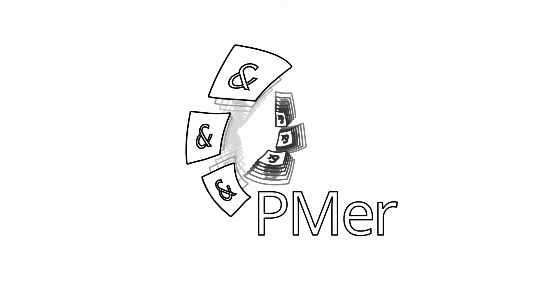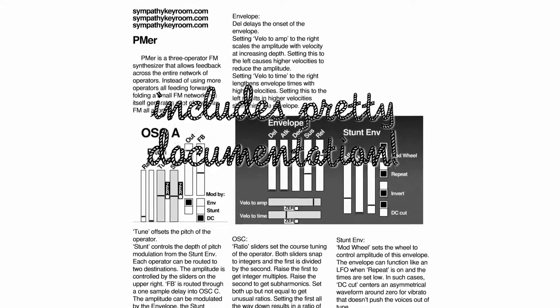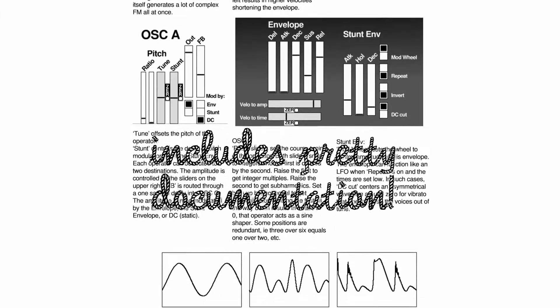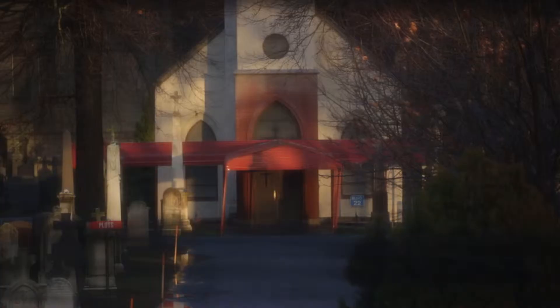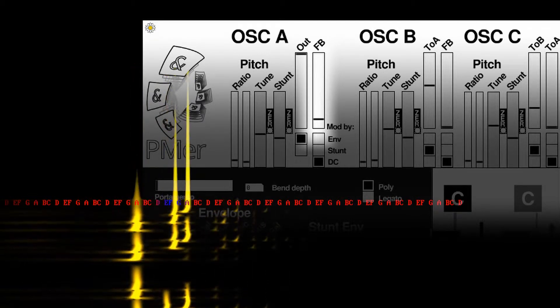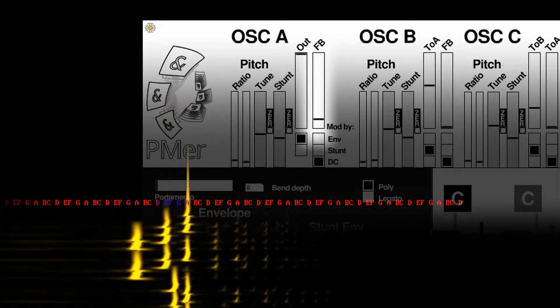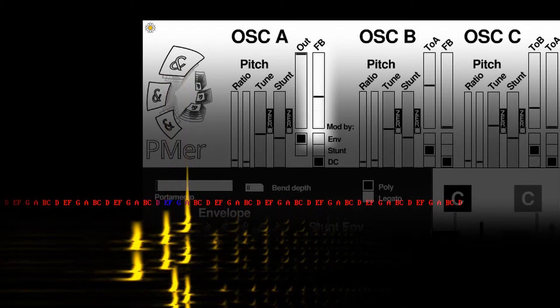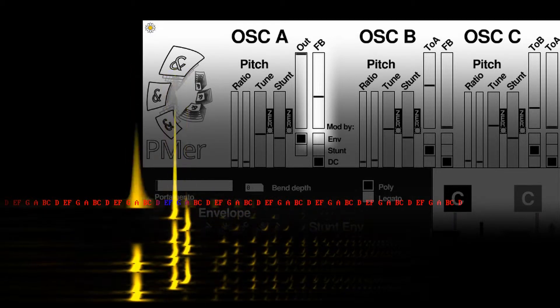PMR uses FM synthesis with feedback over the entire operator network. Let's listen to the effects of the feedback over the three oscillator network. The feedback brings in waveform asymmetry and a certain chewiness.